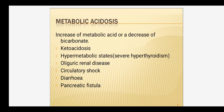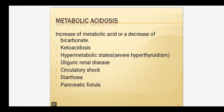Next is metabolic acidosis. Metabolic acidosis occurs when there is an increase in acid or a decrease in bicarbonate ions. Causes include ketoacidosis with increased H+ ions in hypermetabolic states, oliguric renal disease where hydrogen ions are retained due to renal failure, circulatory shock where hydrogen ions are retained, diarrhea where bicarbonate ions are lost, and pancreatic fistula where bicarbonate ions are also lost.